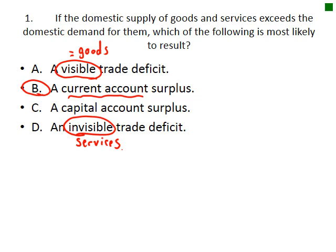The IB doesn't use the terms visible trade and invisible trade anymore, but they could pop up in a data analysis or a question. Visible trade is trade in goods — tangible things you can touch and see. Invisible means services that you can't touch and can't see. So if you ever come across those terms, you'll know what they mean.